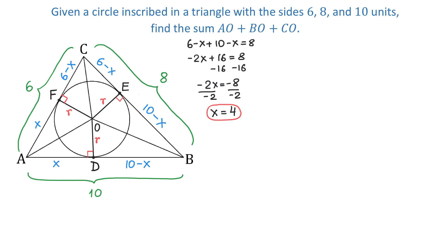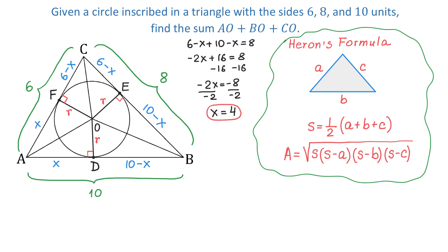So we found X, and in the next step we will find the area of the entire triangle ABC. For this, we will use Heron's formula. We can use this formula when we are given all three sides of a triangle.